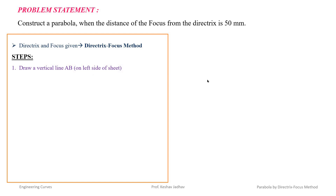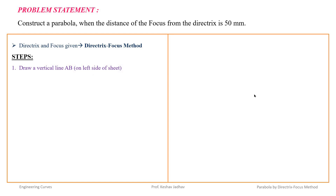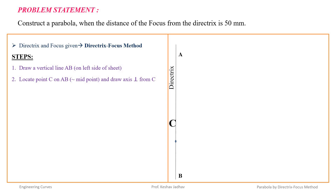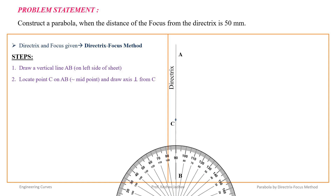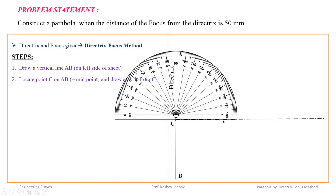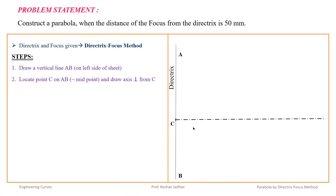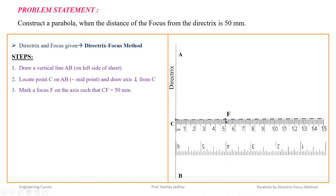First, draw a vertical line AB which is the directrix. On this directrix AB, take point C approximately at the midpoint. From point C, draw a horizontal axis perpendicular to directrix AB. Since the distance of focus from the directrix is 50 mm, measure 50 mm from the directrix along this axis and mark the point F (focus).